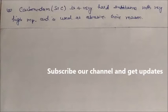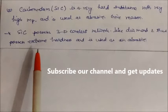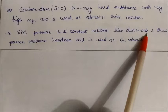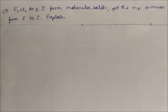Carborundum, that is silicon carbide, is a very hard substance with a very high melting point and is used as an abrasive. Why is it used as an abrasive? Because silicon carbide possesses a three-dimensional covalent network structure like diamond. Like diamond, it is a perfect covalent network. That's why it possesses extreme hardness — even harder than diamond — and is used as an abrasive.